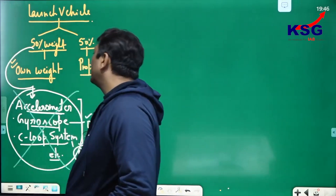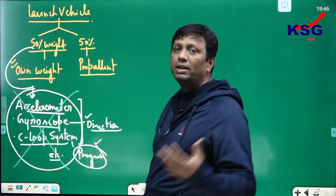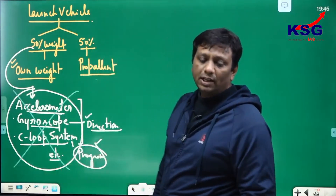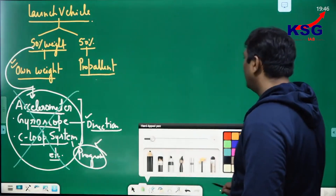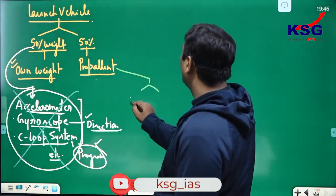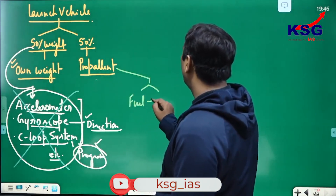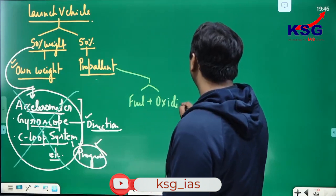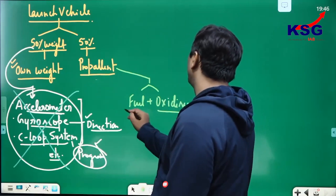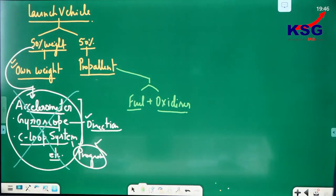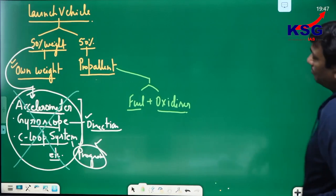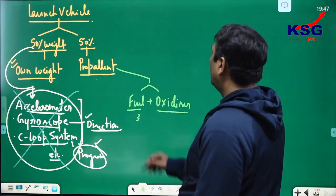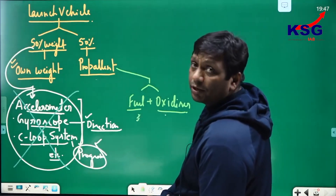So 50% weight comprises instruments and devices. Now, what are the propellants? Propellants are the sum of fuel plus oxidizer. Fuel is what burns, and the oxidizer is responsible for the burning of the fuel.